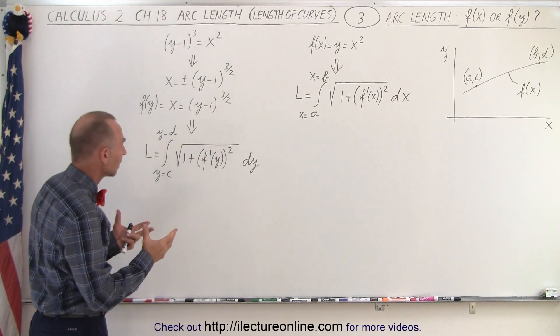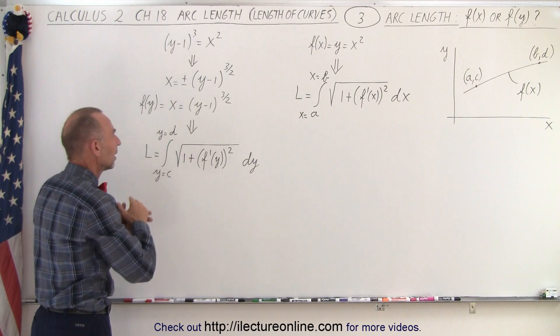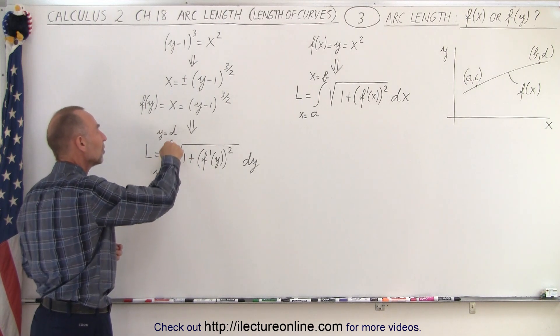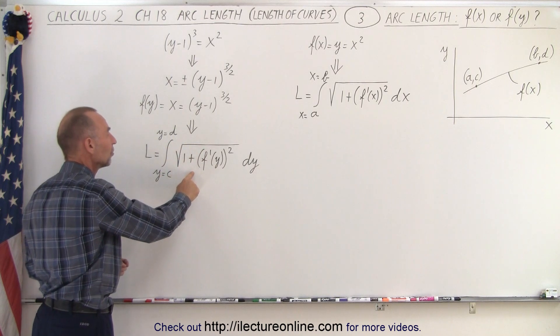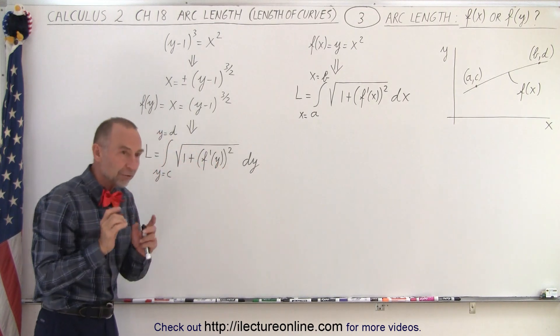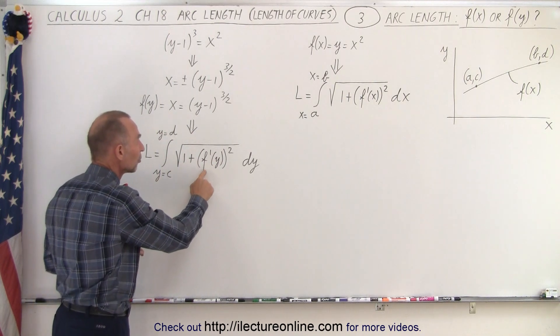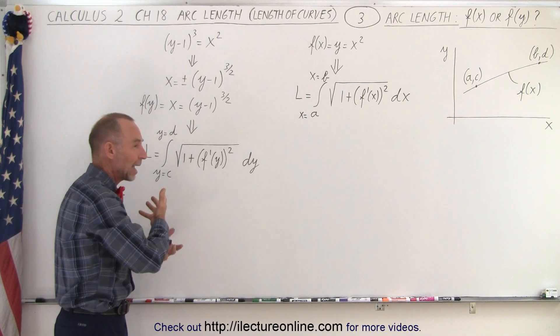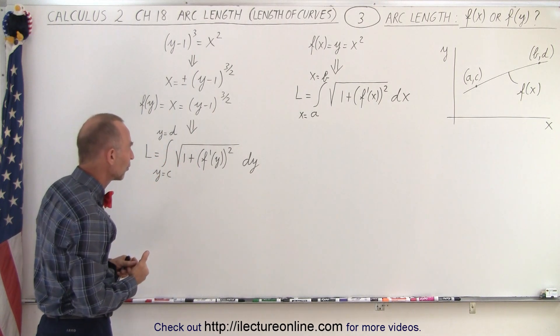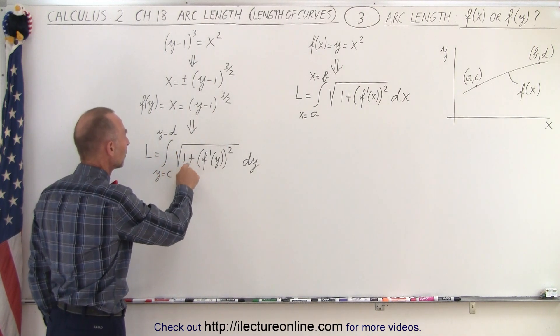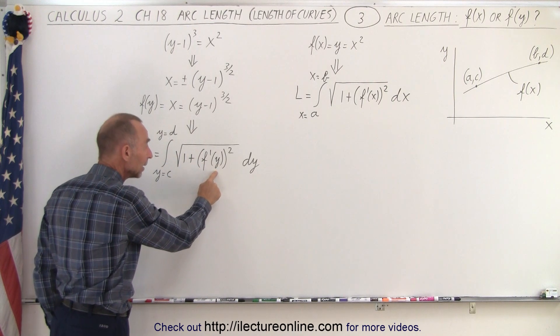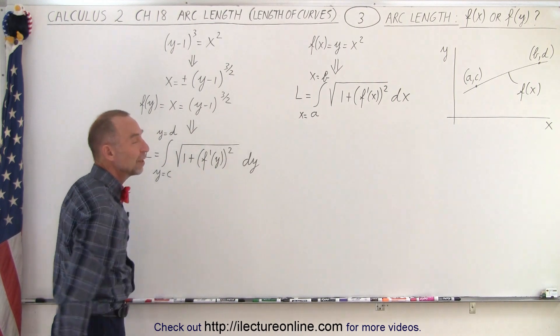And then when we try to find the arc length we use this integral instead. We're now integrating over y limits. We still have the square root of one plus, but now we have the derivative of the function in terms of a function of y. So now it's kind of turned over on a 90 degree angle so to speak. And we have to put the square root of one plus the derivative of the function with respect to y squared times dy.